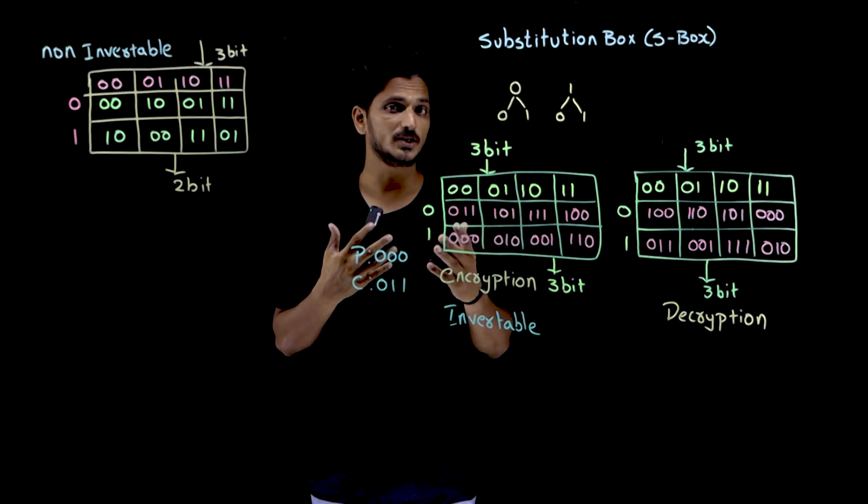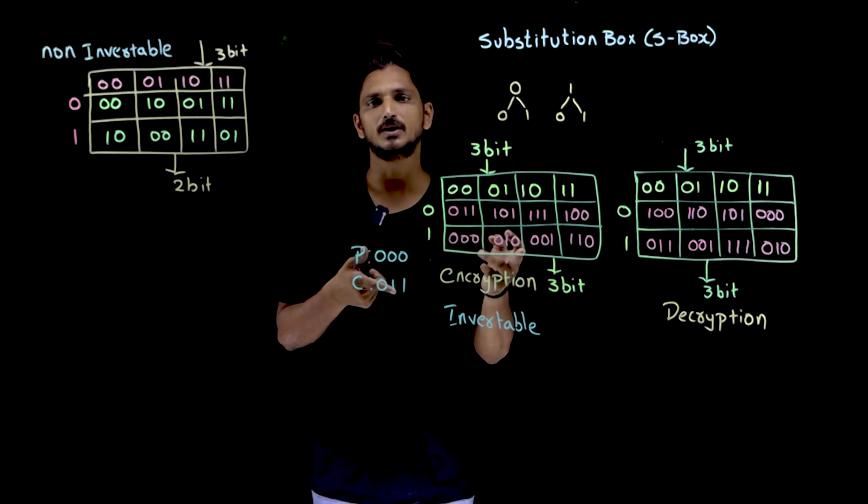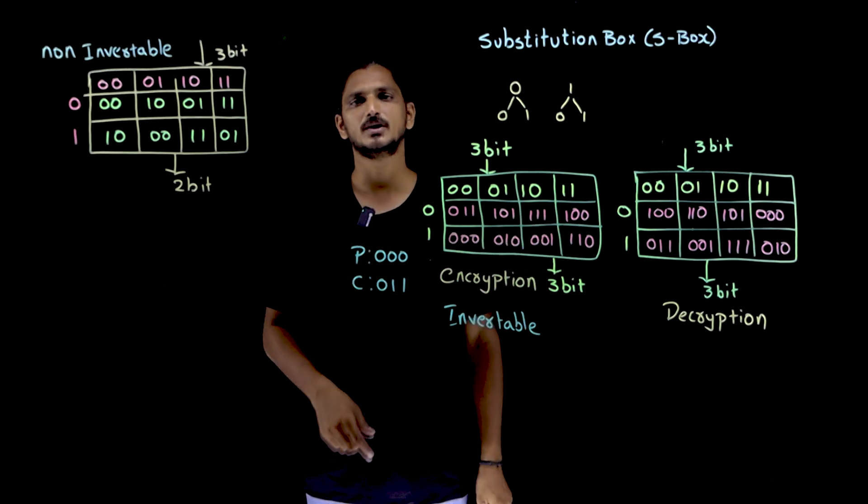So how many possibilities are there? 3 bits means total how many possibilities are there? 8 possibilities are there. These are the 8 possibilities which we got.